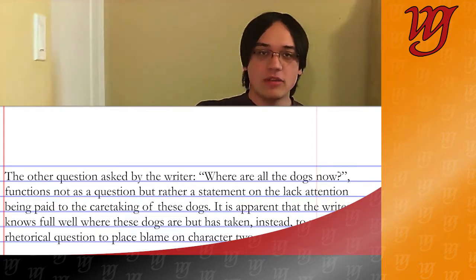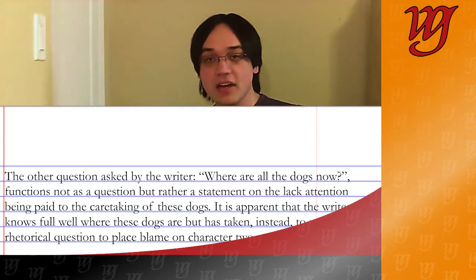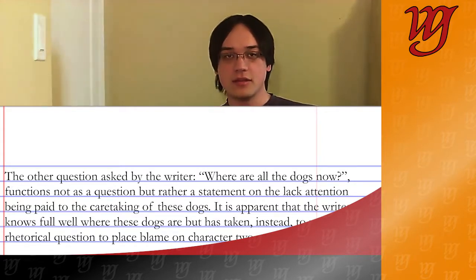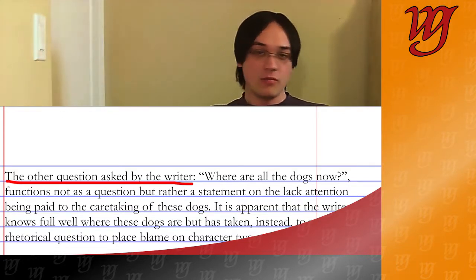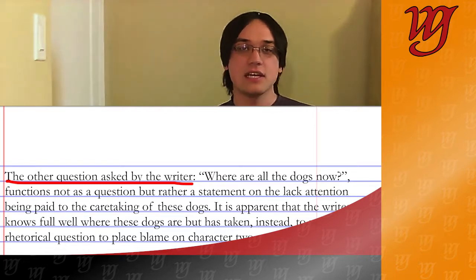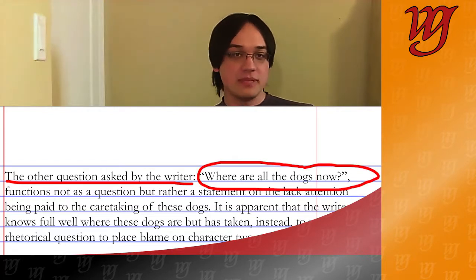The best way to craft paragraphs is to understand how they begin and when they should end. The first sentence of a paragraph is vital because it establishes two discrete things: first, what your paragraph will be about, and second, how it's going to relate to the paragraphs that preceded it. In creative writing, these topic sentences tend to be a lot less explicit than they are in academic writing. For example, academic topic sentences usually look something like: 'The other question asked by the writer, where are all the dogs now, functions not as a question, but rather as a statement on the lack of attention being paid to the caretaking of these dogs.' You have a clear sense of why this relates to the other statements, you know what this paragraph will be about, and you can see how paragraphs are bridged and ideas connected together.